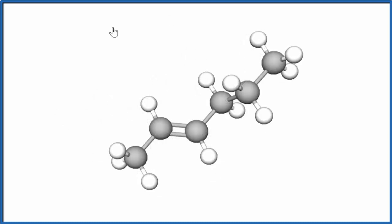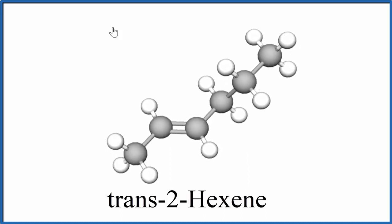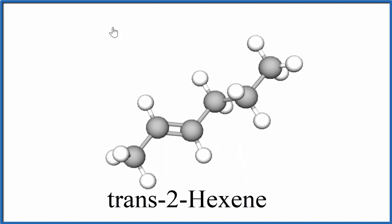For the trans isomer, they're on opposite sides. The hydrogens are on opposite sides, and these carbons—this carbon and this chain of three—are on opposite sides. This is called the trans geometric isomer.